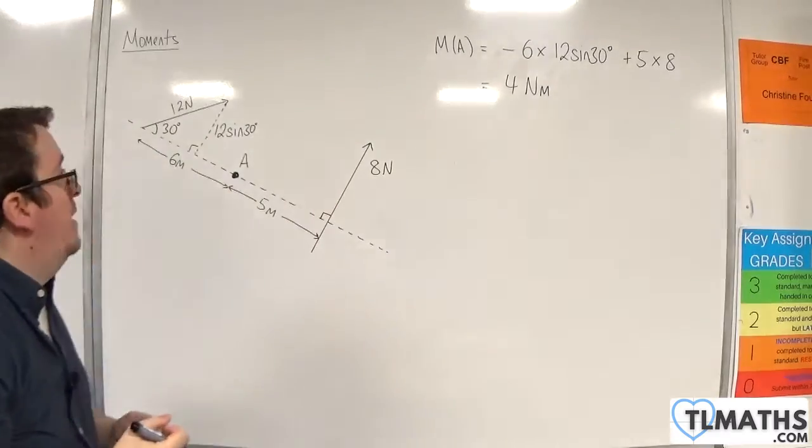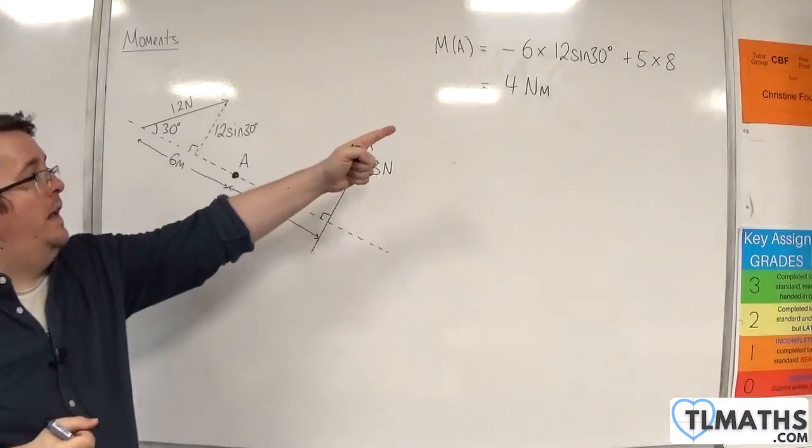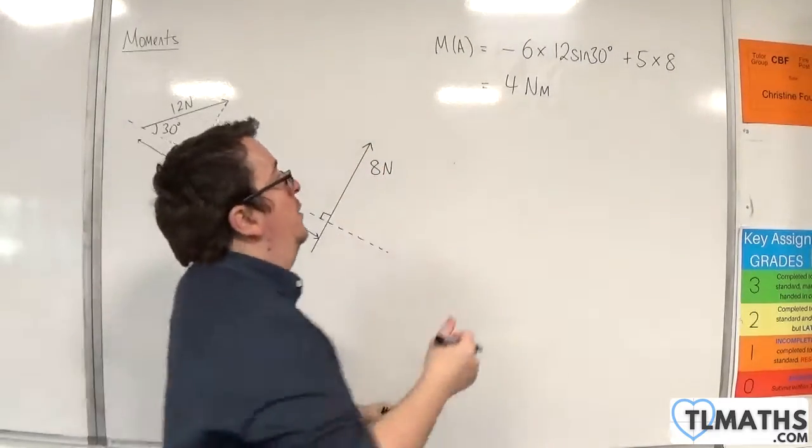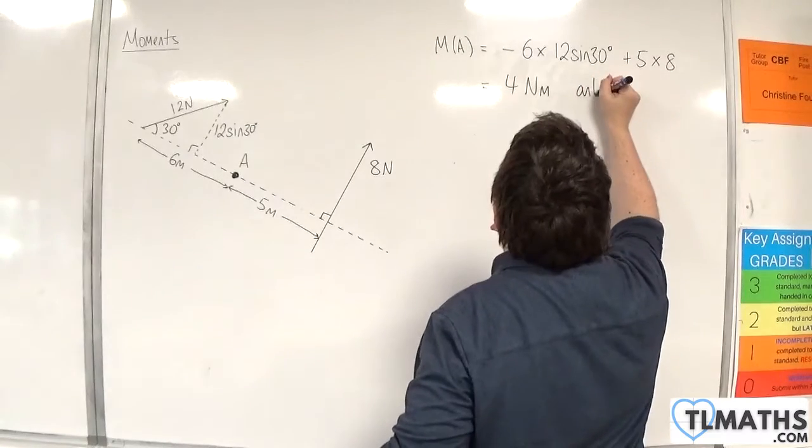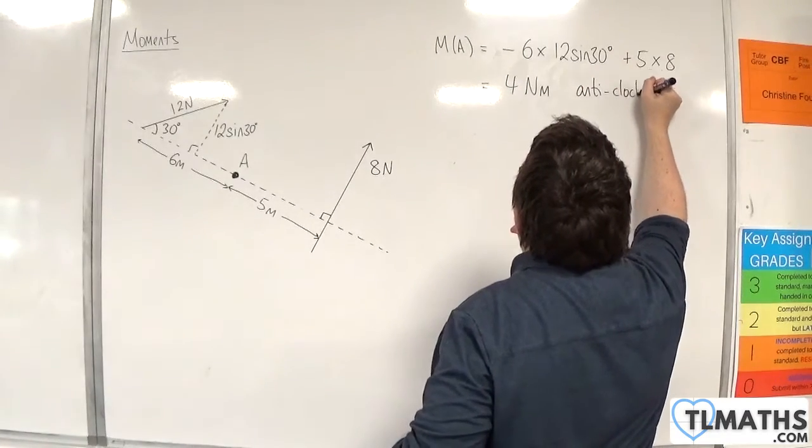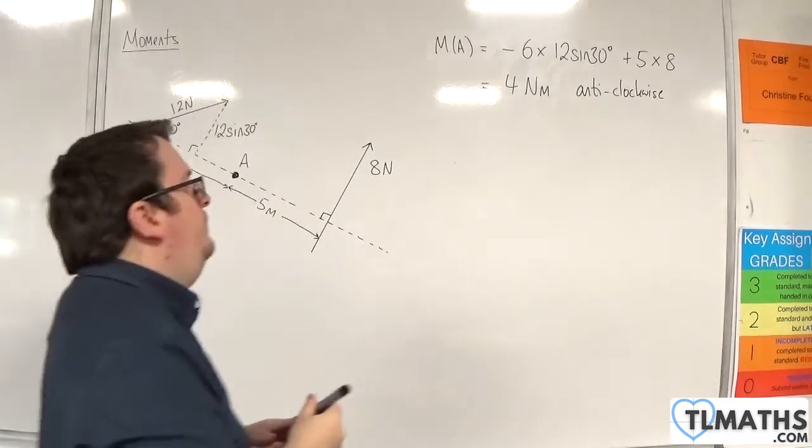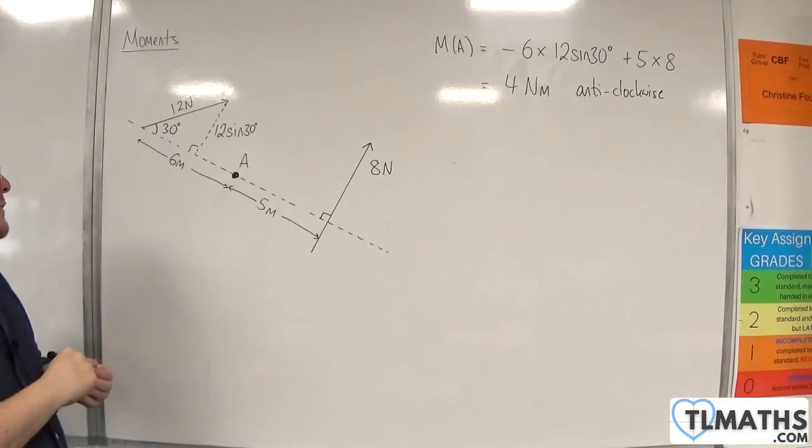OK, and the direction, because that is positive, this would be anti-clockwise. OK, so 4 Newton metres anti-clockwise.